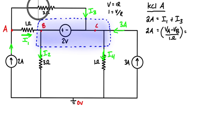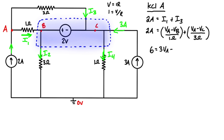For I3, the voltage drop is Va minus Vc, divided by 3 ohms. So the KCL at node A equation is: 2 = (Va − Vb)/1 + (Va − Vc)/3. Multiplying everything by 3 gives: 6 = 3(Va − Vb) + (Va − Vc), which simplifies to 6 = 4Va − 3Vb − Vc.